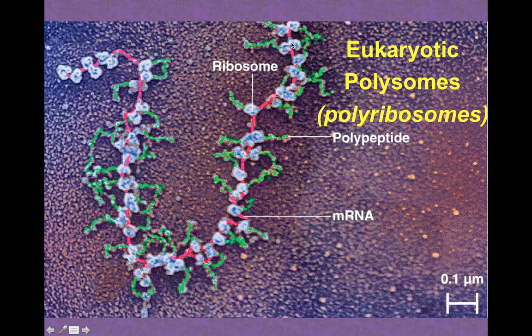This is a picture of a eukaryotic polyribosome. It's pseudo-colored — it doesn't actually look like this under the electron microscope — but you can see this line that threads through this entire diagram is the messenger RNA. On the messenger RNA are ribosomes, and each ribosome is producing a polypeptide. Where is the beginning of this messenger RNA? Where is the 5' end? Well, it would be where the polypeptides are the shortest, over here.